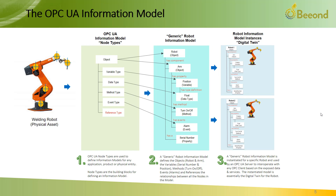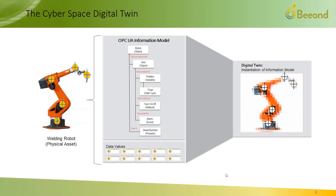With the UA node types, basically any application's data and services can be defined, even applications that are not equipped to work with higher level model constructs. This flexibility is why OPC UA is so powerful and why it can be used by industry standards organizations to define information models for their application area. Once an information model is defined, it is instantiated for specific robots, essentially defining a robot's digital twin — a digital representation of the robot in cyberspace that includes the actual data values associated with the instance. Through the robot's digital twin, any OPC UA client can visualize the robot through the data that is exposed and interact with it through the services that are exposed.